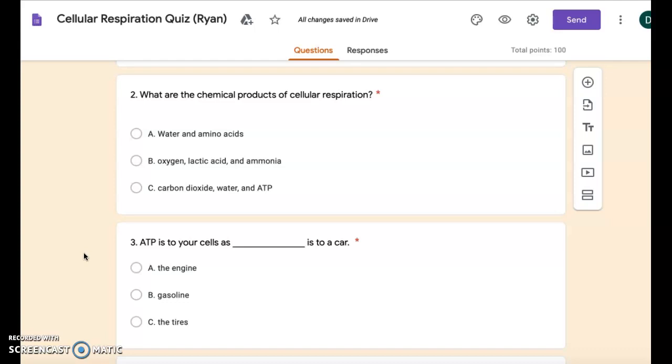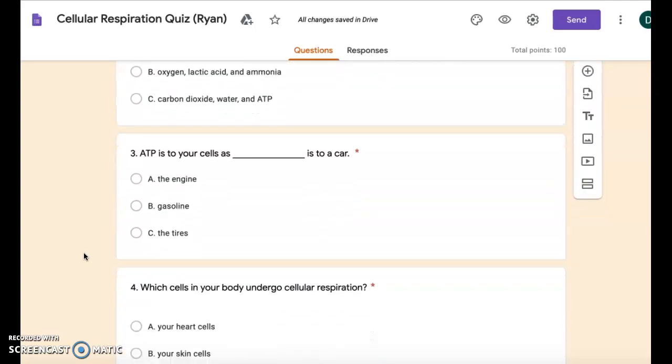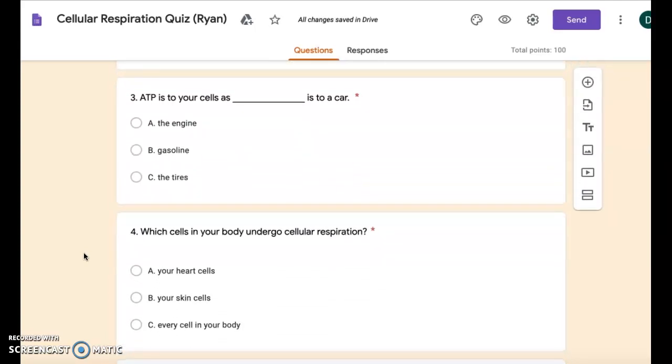Number three: ATP is to your cells as blank is to a car. A: the engine. B: the gasoline. C: the tires.